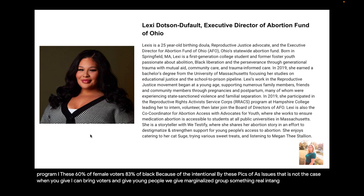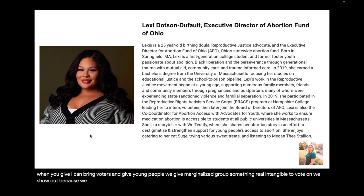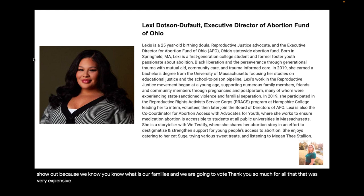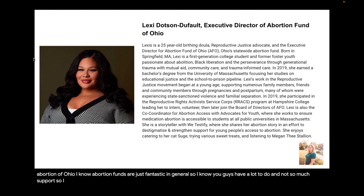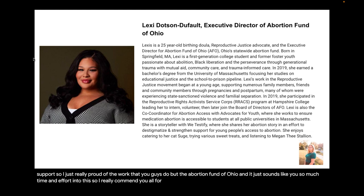60% of female voters, 83% of Black voters, and 77% of voters under the age of 30 voted yes on that issue. That is directly because of the intentional work that Ohio Women's Alliance did to reach out to these groups of people. They were being forgotten, not being prioritized by white-led legacy organizations with millions of dollars to do this work. That work was laid on the backs of a very small Black-led organization. Black and Brown communities are consistently labeled as disenfranchised groups that don't come out to vote — and that's not true. When you give Black and Brown voters, when you give young people, when you give marginalized groups something real and tangible to vote on, we show out because we know what is best for ourselves and our families.